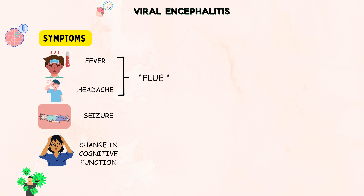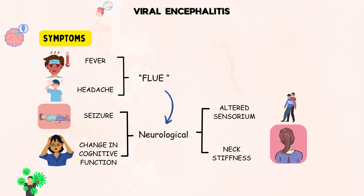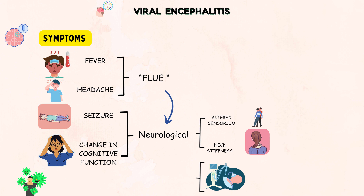Viral encephalitis presents with flu-like symptoms initially, progressing to neurological manifestations such as confusion, seizures, altered consciousness, and neck stiffness. Patients may experience sensitivity to light, weakness, and behavioral changes. Severe cases can lead to coma and respiratory problems. Timely medical attention is vital for proper management and to prevent complications.